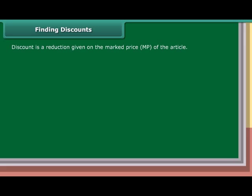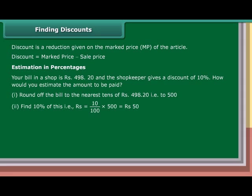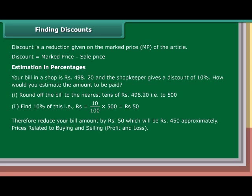Finding Discounts: Discount is a reduction given on the market price (MP) of an article. Discount = Market Price − Sale Price. Estimation in percentages: Your bill in a shop is Rs. 498.20 and the shopkeeper gives a discount of 10%. Round off the bill to Rs. 500. Find 10% of Rs. 500 = Rs. 50. Therefore, reduce your bill by Rs. 50, which gives approximately Rs. 450.